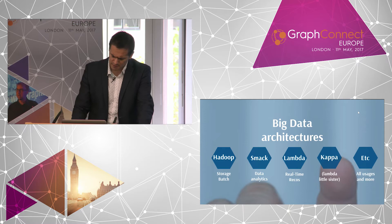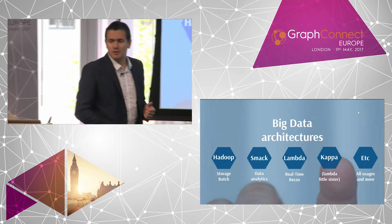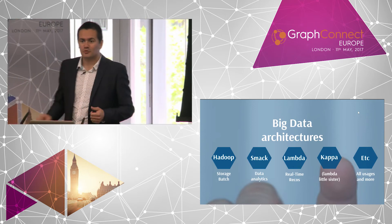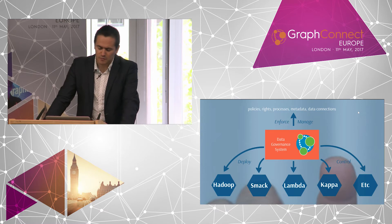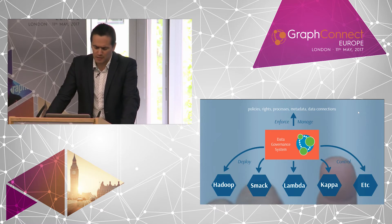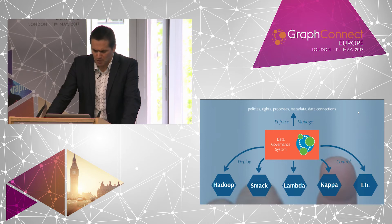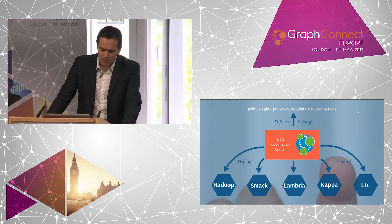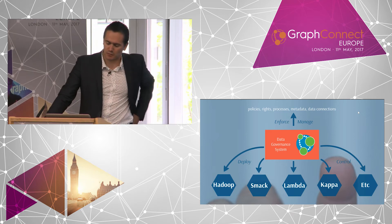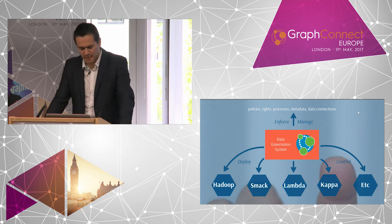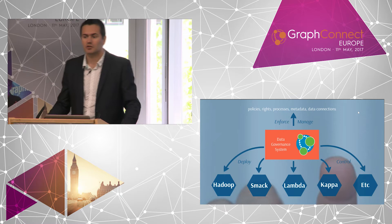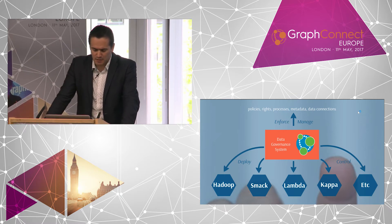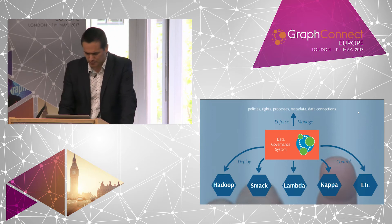The idea is that the elephant was made for slavery, so you don't have to be the slave of the elephant — it's the same for data governance. The data governance system must be inherently connected, and it is a commander for the whole big data architecture and processes. The data governance system connects data together, enforces and manages the policies, rights, processes, metadata and data connections. And then it is able to deploy, thanks to the many connectors from Neo4j with the big data ecosystem, the big data architectures, algorithms and workflows.